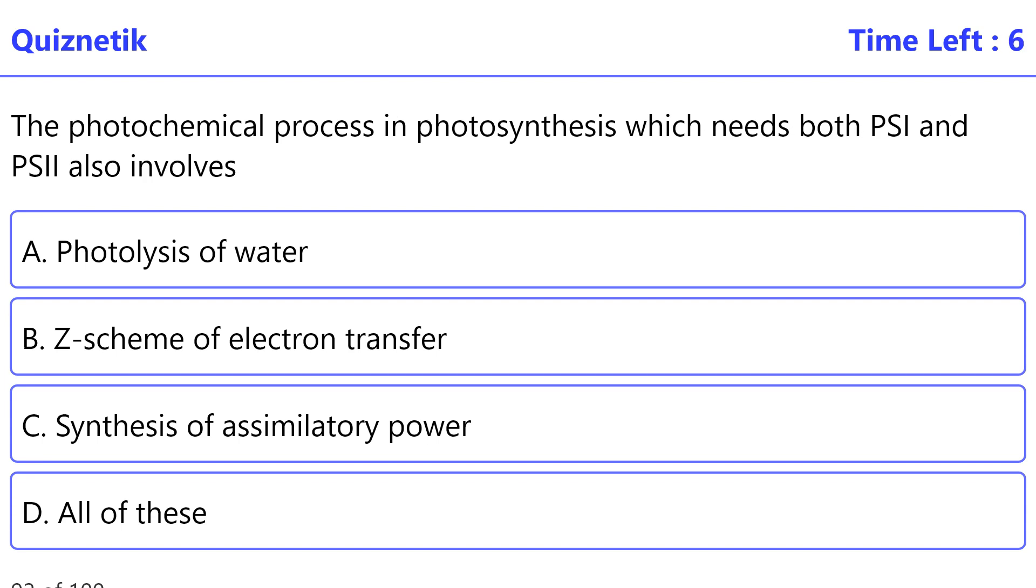The photochemical process in photosynthesis which needs both PSI and PSII also involves - the correct option is D: all of these.